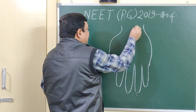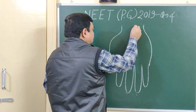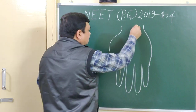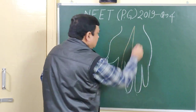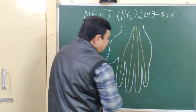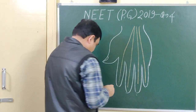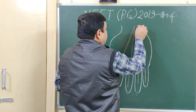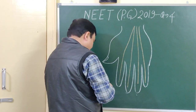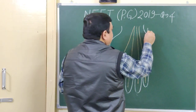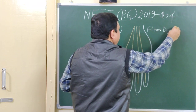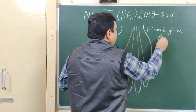Here is the tendon of the flexor digitorum profundus. This tendon of flexor digitorum profundus — there are multiple tendons of the flexor digitorum profundus visible here.